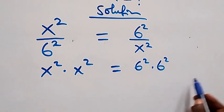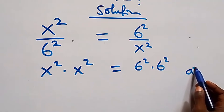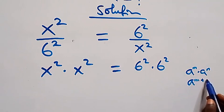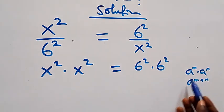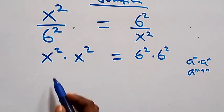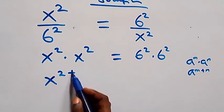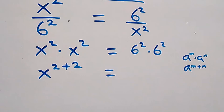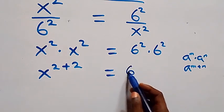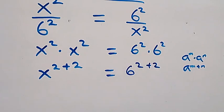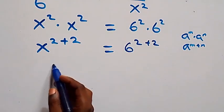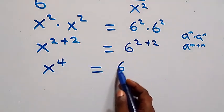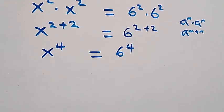From what we have, when we have a raised to power m times a raised to power n, that is the same as a raised to power m plus n. Applying this rule here, we get x raised to power 2 plus 2, which also equals 6 raised to power 2 plus 2, which implies x raised to power 4 equals 6 raised to power 4.